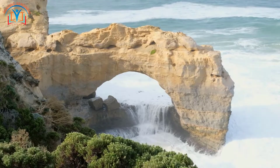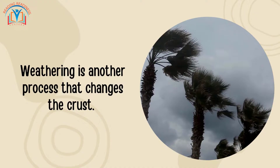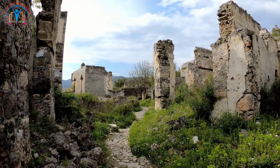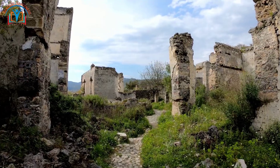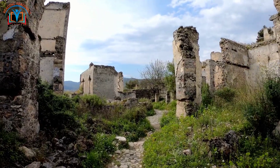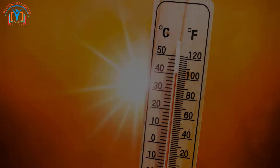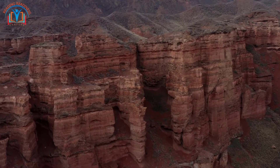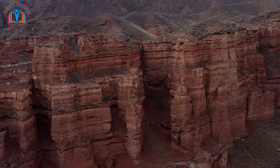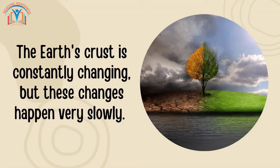Erosion can also create beaches and sand dunes. Weathering is another process that changes the crust. Weathering is the process of rocks breaking down into smaller pieces due to exposure to the elements. Rain, wind, ice, and heat can all cause weathering. Weathered rocks are easier to erode, so weathering can contribute to the formation of new landforms.